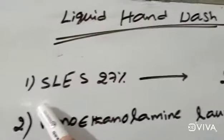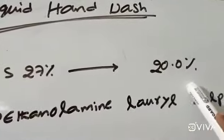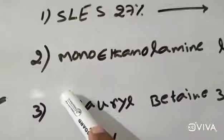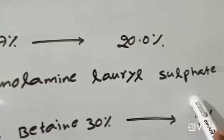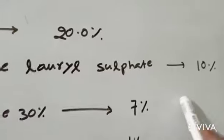1. SLES 27% - we have to take 20%. 2. Monoethanol Amine Laurel Sulfate - 10%.